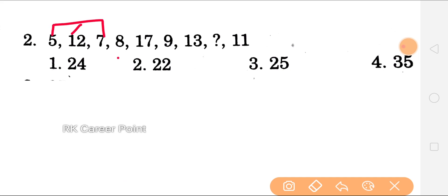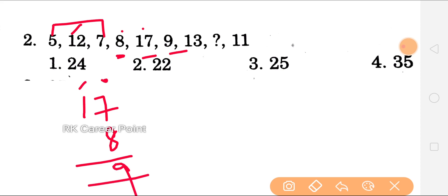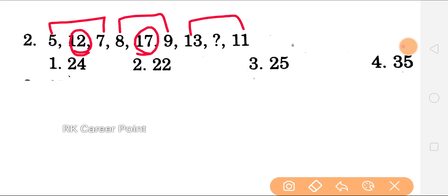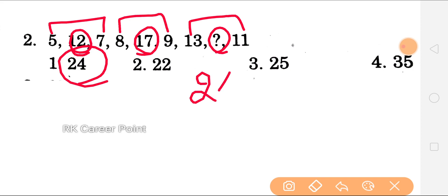So now we have 8, 17, 9. Here we have 8 and 17 — the difference is 9. So 8 plus 9 equals 17. Now we have 9, 8, and 9 — this repeats. So: 5 plus 7 = 12, 8 plus 9 = 17. Now we have 9, 8, then 27 — and the question mark place gives us 24. So option 1 is the right answer.